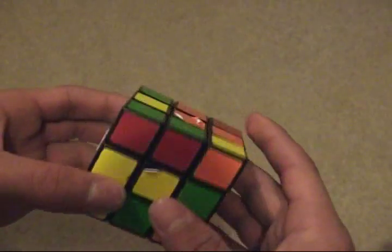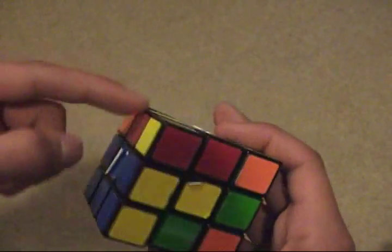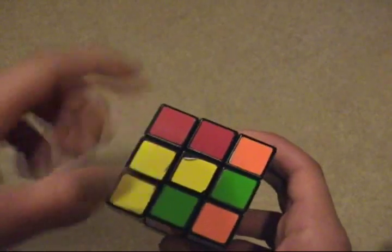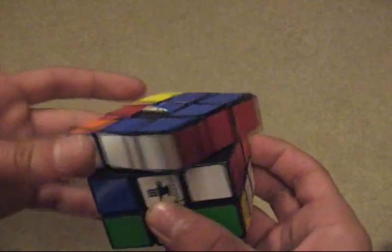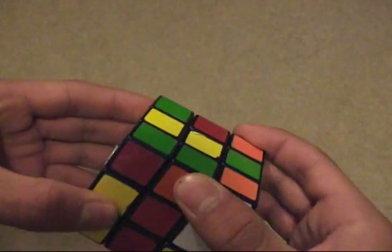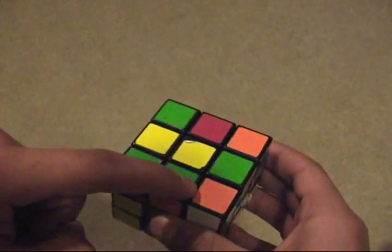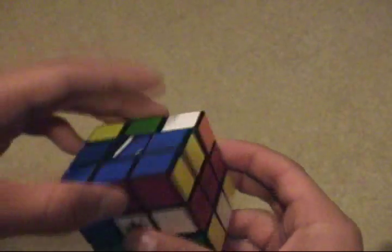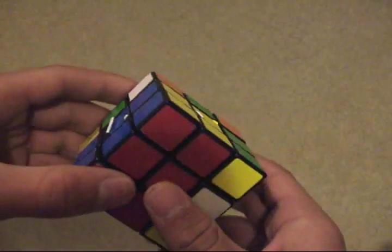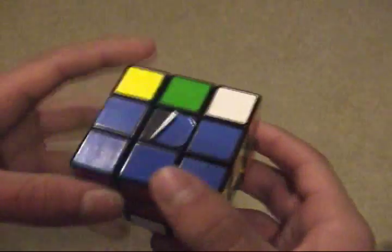The first thing I do is move this on the yellow layer, which also breaks up the 2x2x2 block. Now I'm going to move it here into position. When I restore the block, I have created the 2x2x3 block.